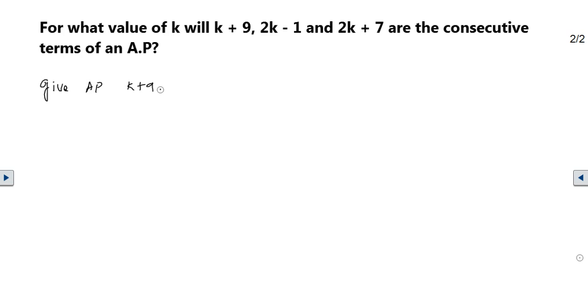So, given k + 9, 2k - 1, and 2k + 7. Read it as 2k + 7. Now these are our three values, and the first value would be a1, followed by a2 and a3.